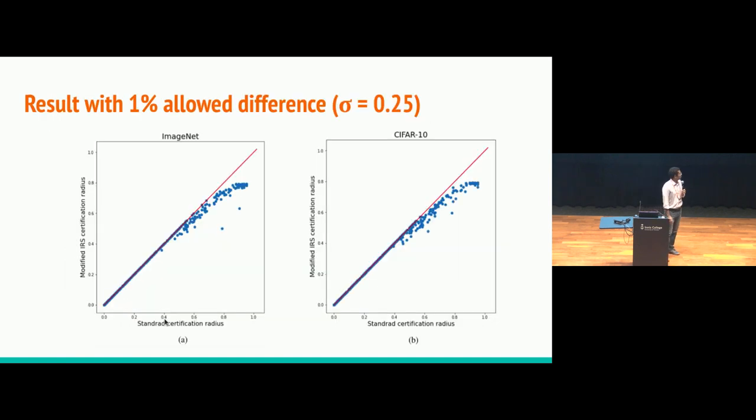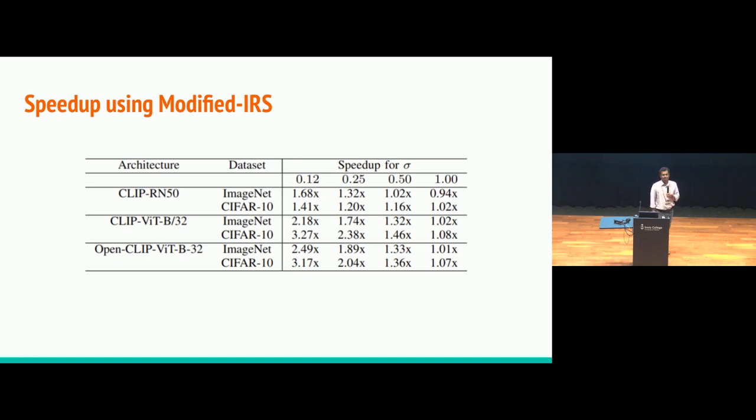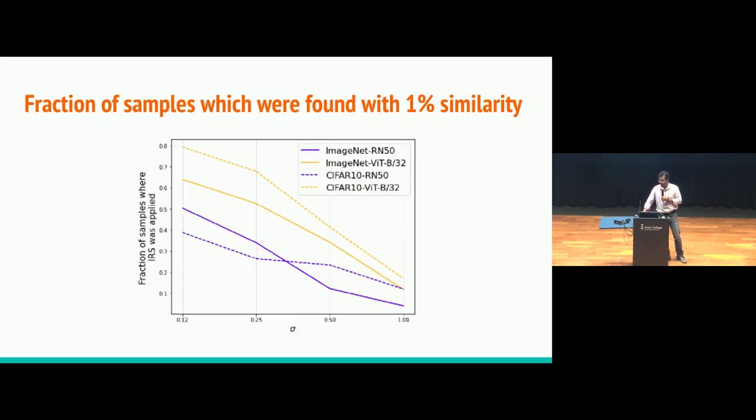And this gives us results like this. On the x-axis, we have randomized smoothing certification. And on the y, we are using our modified version. And we see that wherever we have used modified version, since we are reducing the probability, we are getting slightly lower certificate, but it's still quite reasonable to us. And this is the speed up for different configuration. We can see that for smaller networks like ViT, sometimes we even get 3x certification when the noise is less. But as we increase the noise, our gain is lost. And we found that this is happening because as we increase our noise, it's very hard to find the prompt which is making similar prediction. So that is a limitation of this method.